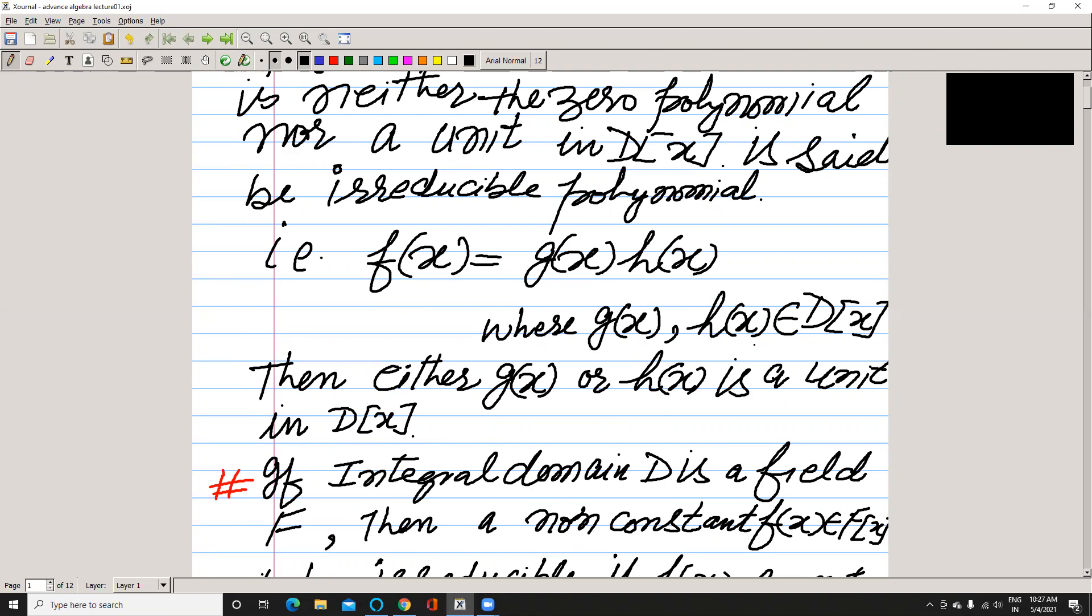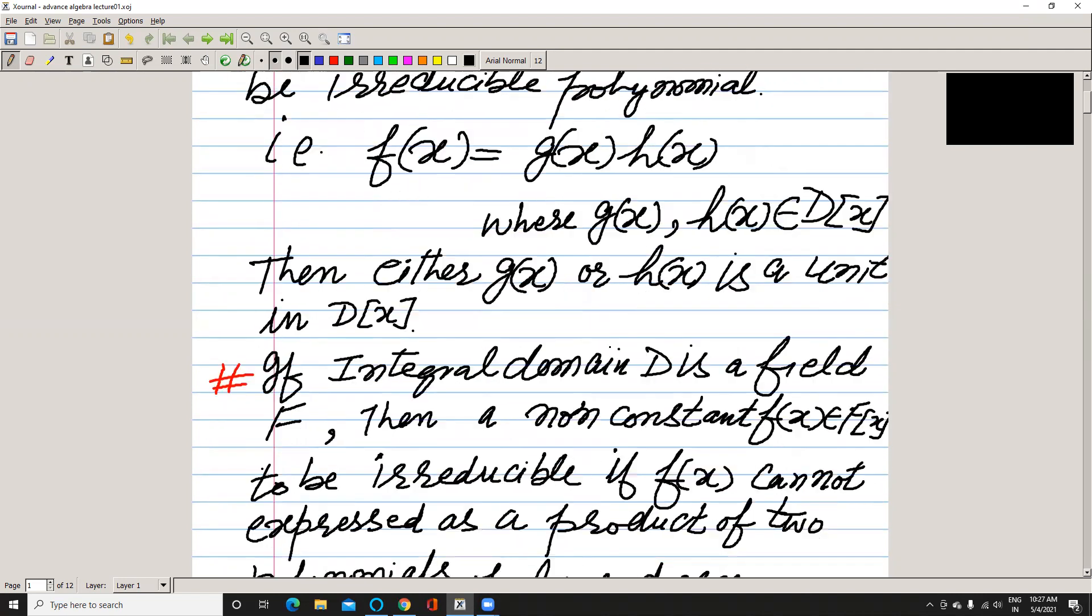Simply, if f(x) is irreducible, then it cannot be expressed in this form. If we express in this form, either this or this may be a number that has a multiplicative inverse.